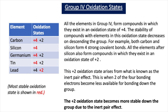The inert pair effect is the tendency for the s2 electrons not to be used in bonding. As you go down the group, the inert pair effect increases, and that's why group 4 elements down the group have a tendency to form the plus 2 oxidation state. When we get to lead, which is right at the bottom of group 4, the plus 2 oxidation state is the most stable due to the inert pair effect being so strong.